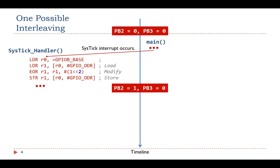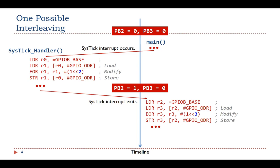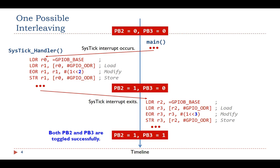After the interrupt exits, the main program resumes from where it was stopped and starts the load-modify-store sequence of operations to toggle PB3. At the end, both PB2 and PB3 are successfully toggled.